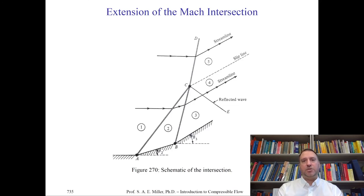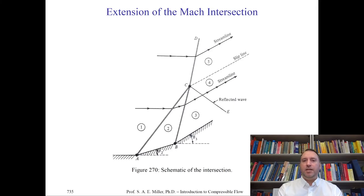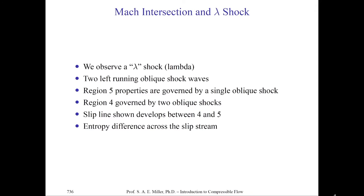Looking at the streamlines: the streamline going across CD is turned through one flow deflection angle equal to the total flow deflection at angles A and B — its angle is theta3, the total turning angle in this double corner. There's also another streamline which goes from 1 to 2 to 3, then across the reflected wave. Across every shock, streamlines are instantaneously turned by the discontinuity in the flow field. The same flow phenomenon happens if there are two right running waves in the double corner.